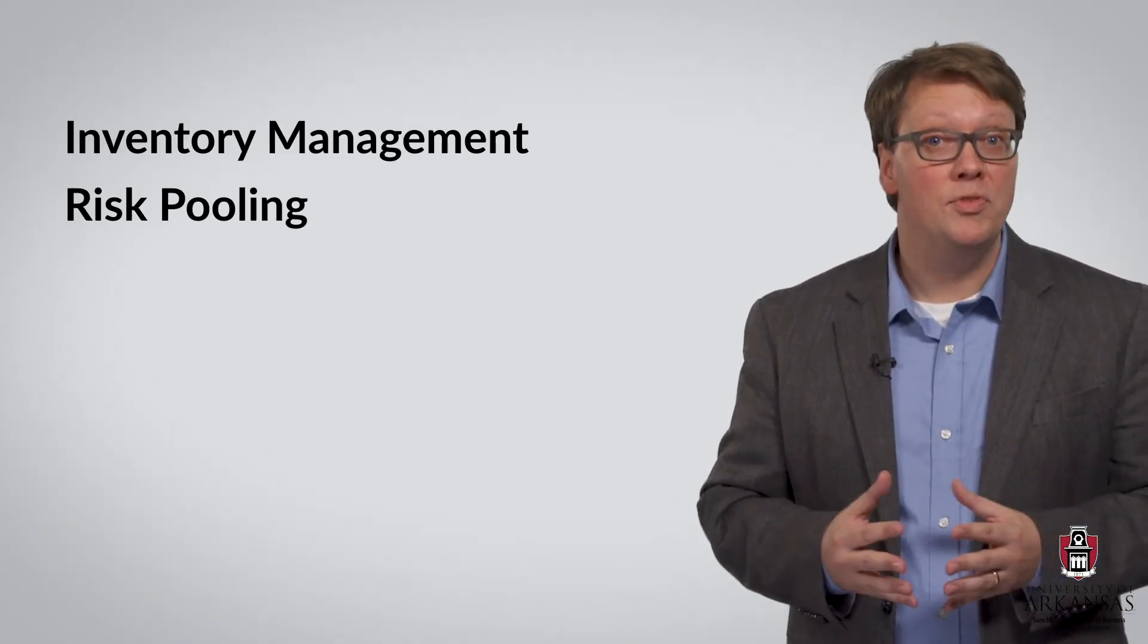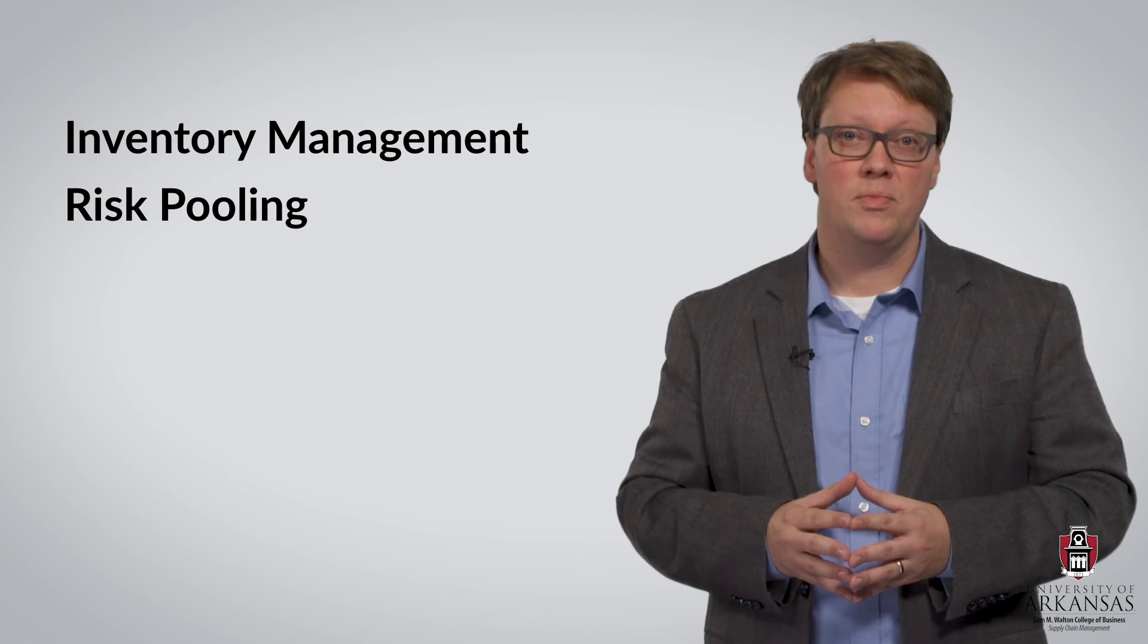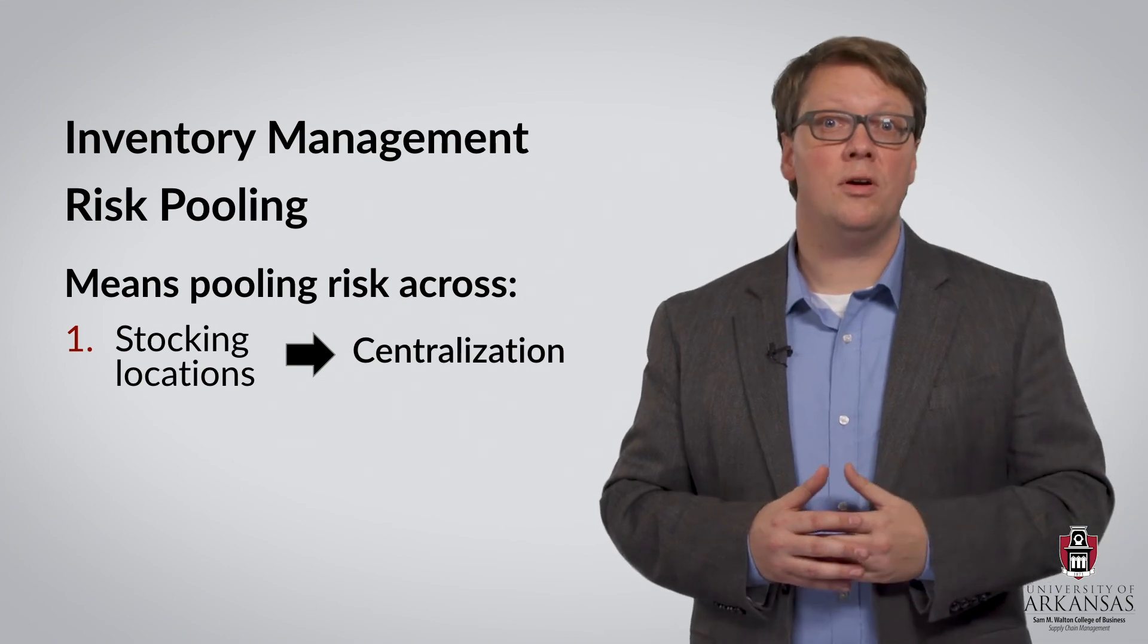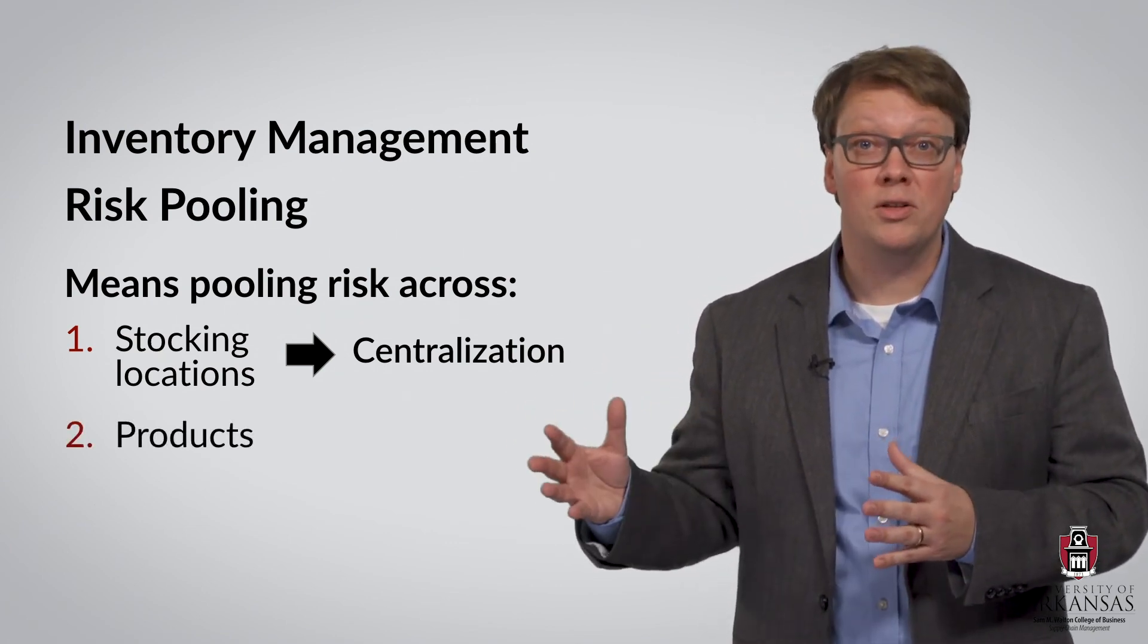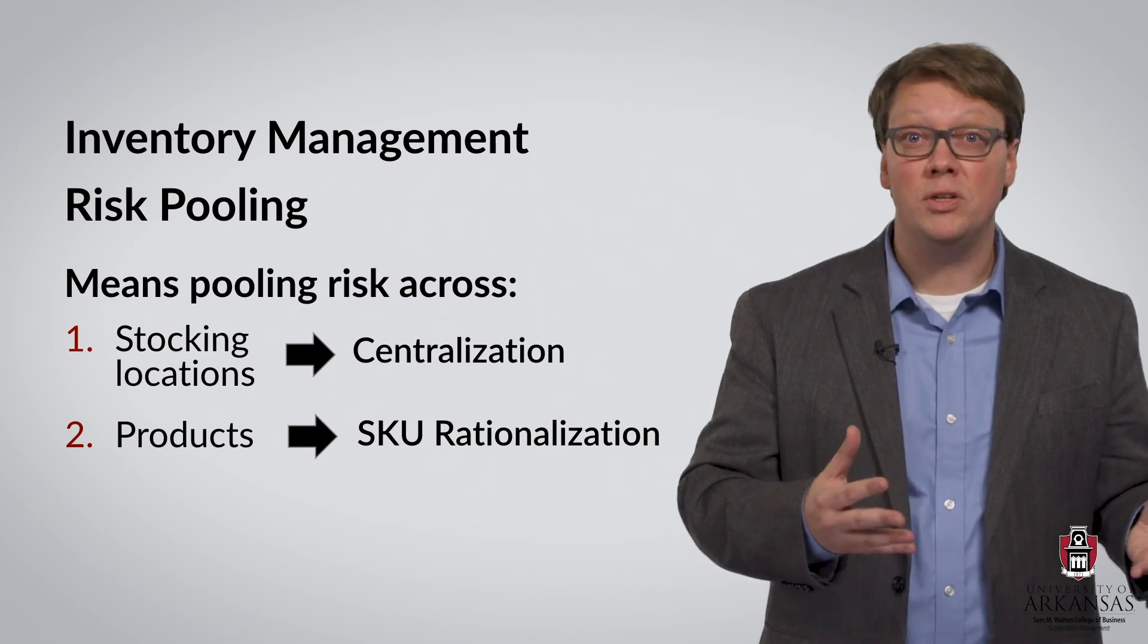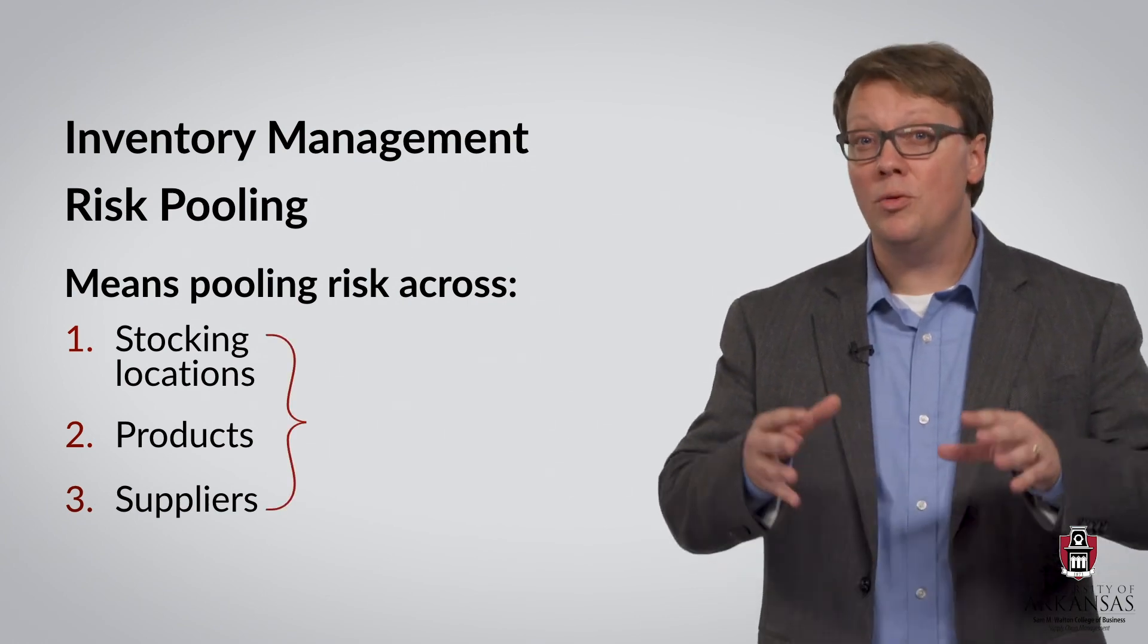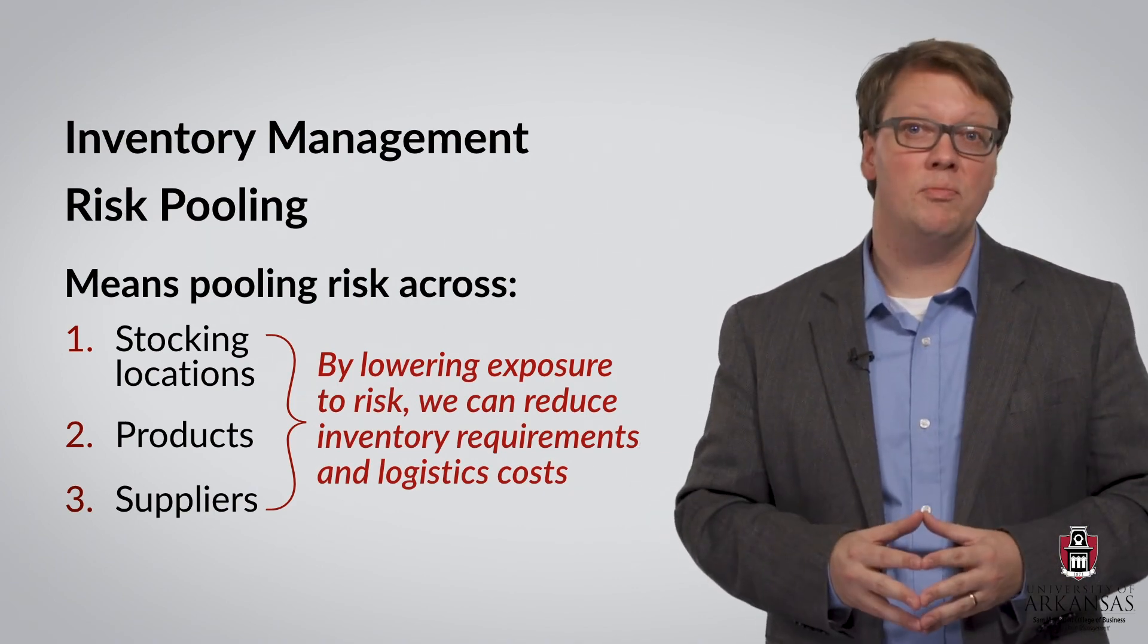We will work through some risk pooling problems in a series of Excel-based videos. These Excel demonstrations will cover different risk pooling methods. In this lecture, our conversation about risk pooling focused on pooling risk across stocking locations. So the centralization of stocking locations is one risk pooling method. But we can also pool risk across different products. In this case, we speak of SKU rationalization, where SKU stands for stock-keeping unit. And then we can pool risk across suppliers. This is called order splitting. While all these risk pooling methods are quite different, they all rely on the same principle. By lowering exposure to risk, we can reduce inventory requirements costs and logistics costs.